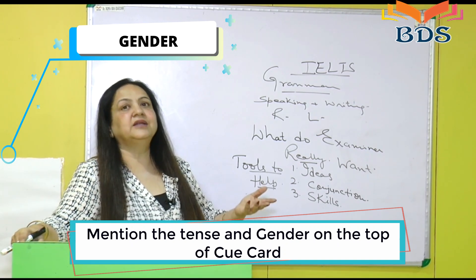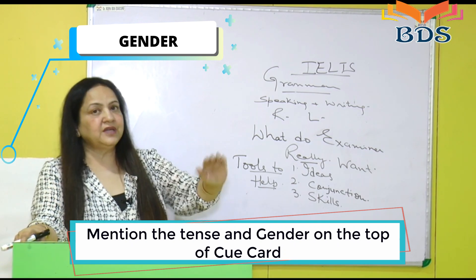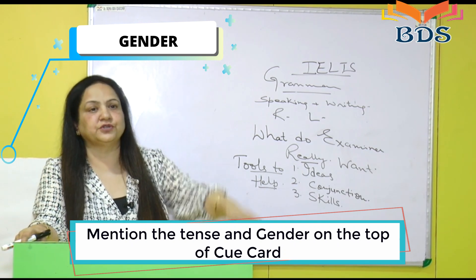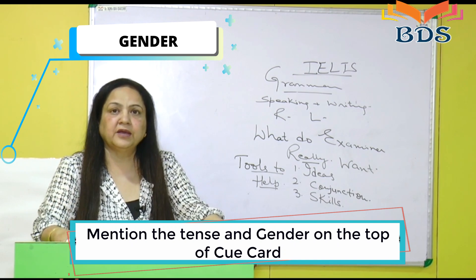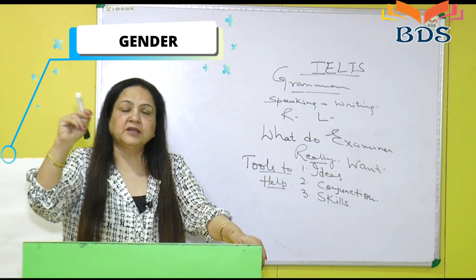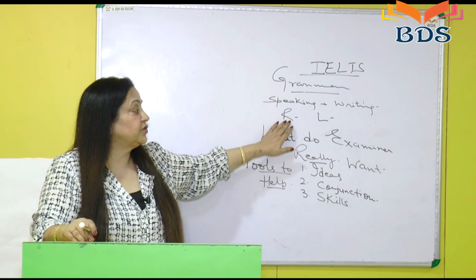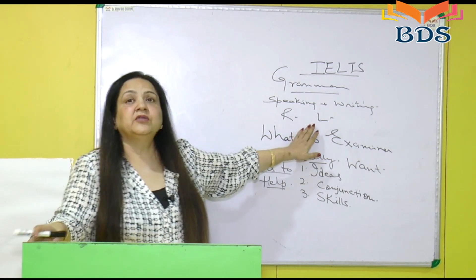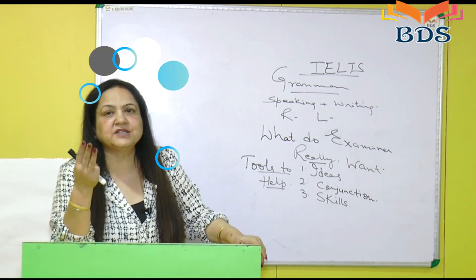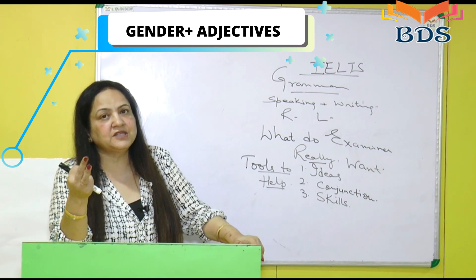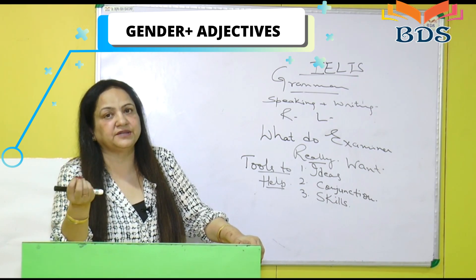The third type of card that they generally ask is about something related to the future — for example, 'Talk about a product you wish to buy.' That card is going to be in future tense. So there are just three tenses: past, present, future — and one gender to handle.